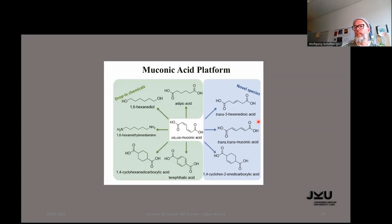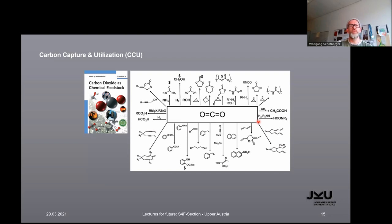There is also another class of compound, this muconic acid. This is a very interesting molecule because you can react this to adipic acid, hexanediol, hexamethylenediamine, or other drop-in chemicals or novel species like this trans-3-hexenedioic acid, for example. These are fully isolated from biomass and could replace later on parts of the common industrial derived molecules from fossil resources.